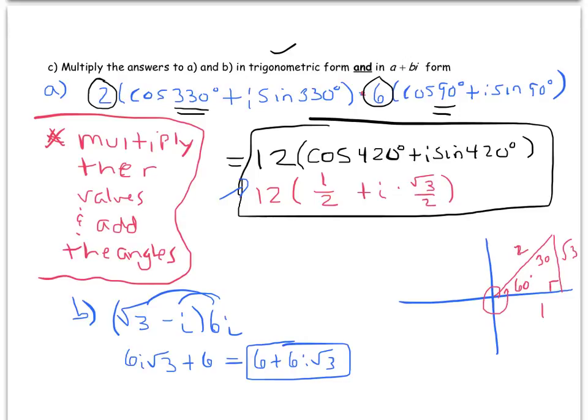And now if we distribute the 12 we get 6 plus, and then 12 divided by 2 is 6, and with that i there and the √3 it becomes 6i√3. So notice we got the same thing.